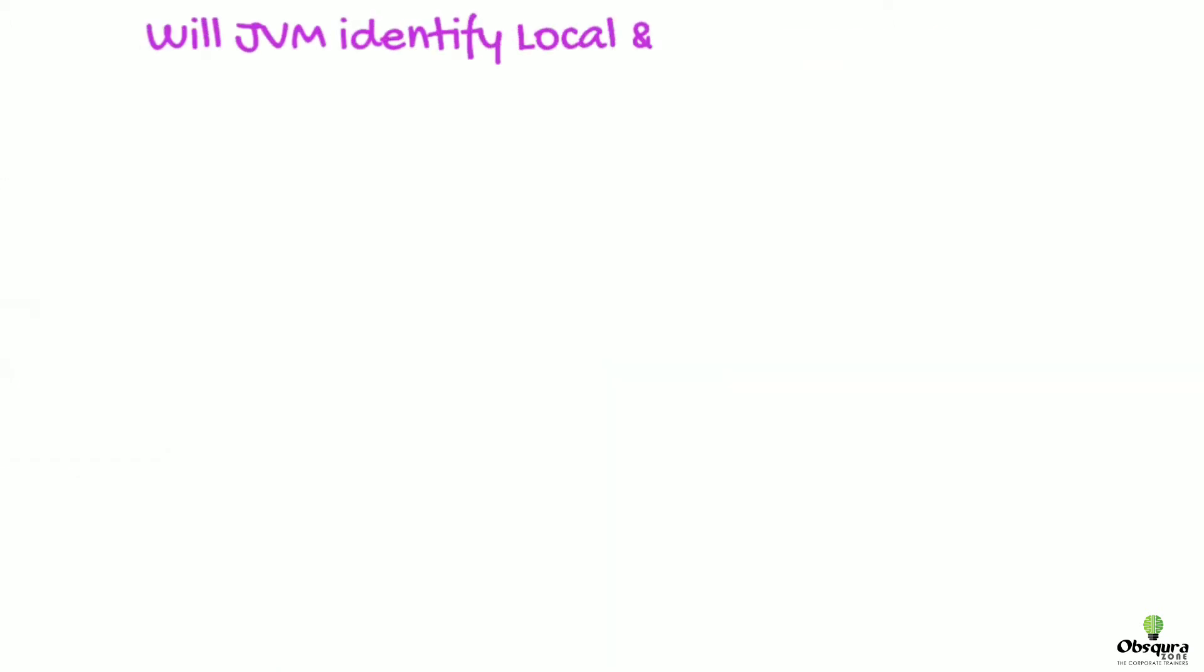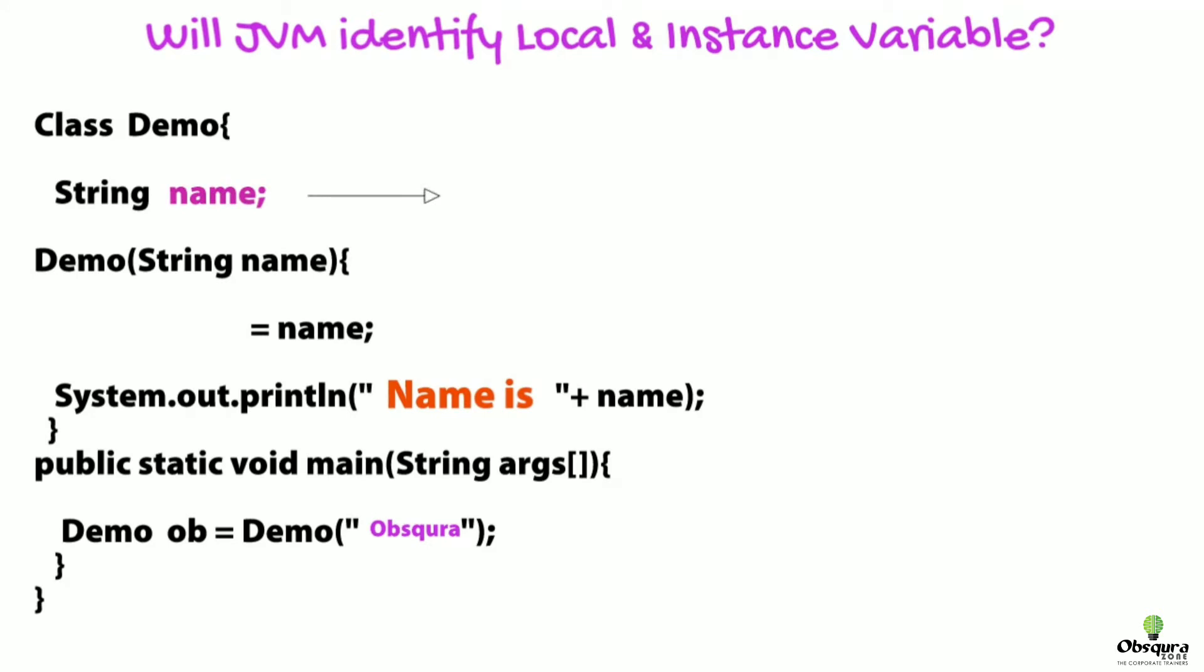Now let's see the examples of these usages. In this case, output will be null because JVM could not identify the instance and local variable.